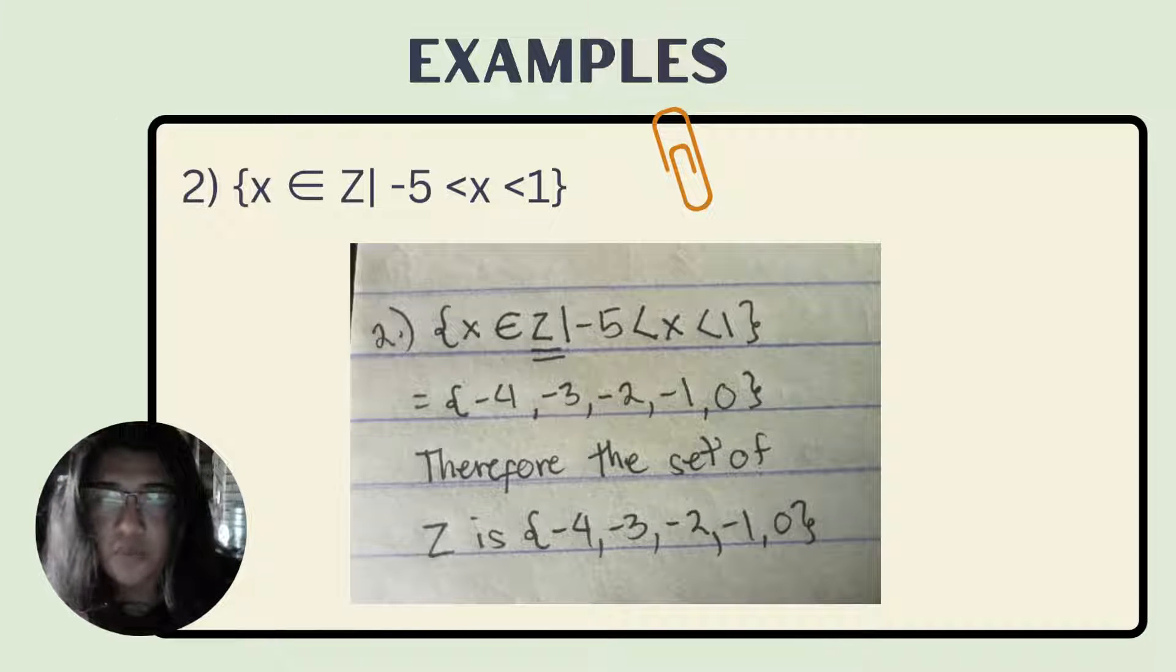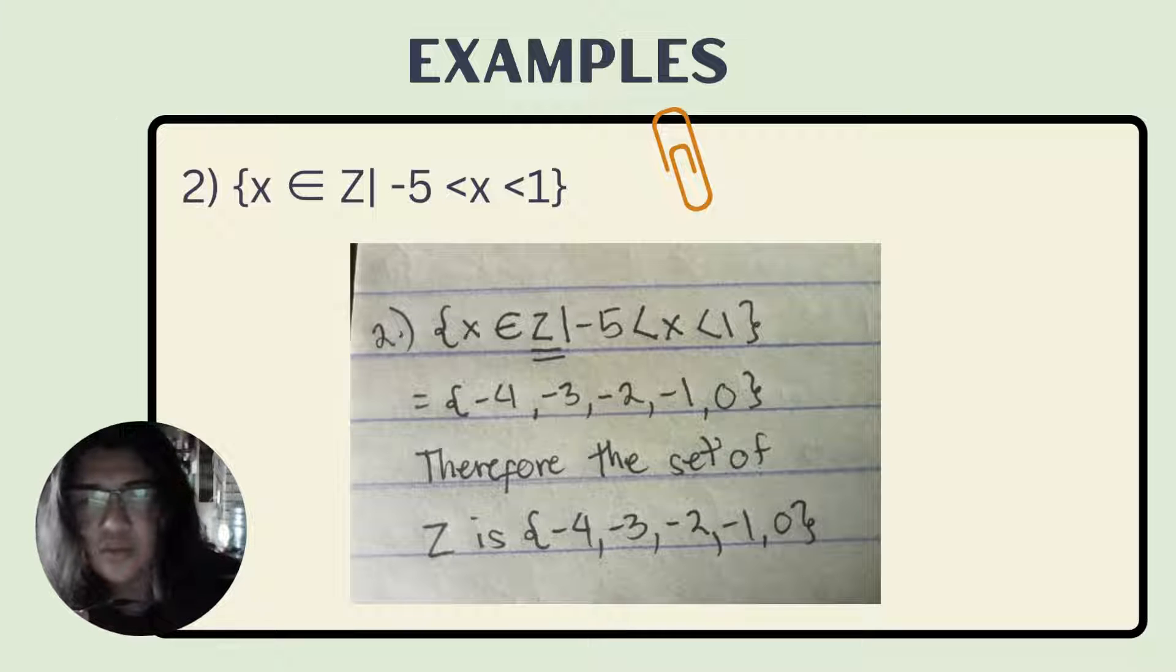Let's go to example 2, which is the set of all X elements of integers such as negative 5 less than X and X is less than 1. What will we find here and how did I get the answer? First, what we're looking for is the integers, which is Z, the one with two lines. That's what we're looking for. What are the integers from negative 5 to positive 1? This is it: negative 4, negative 3, negative 2, negative 1, and 0.